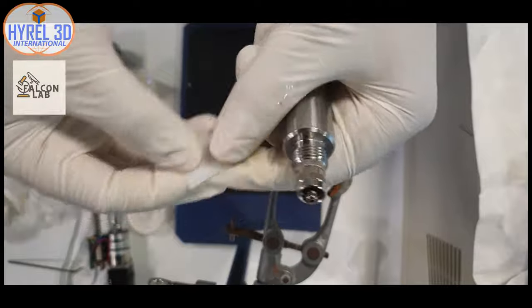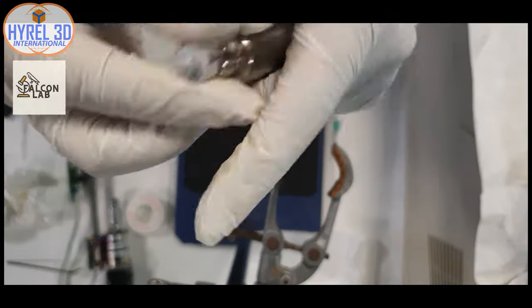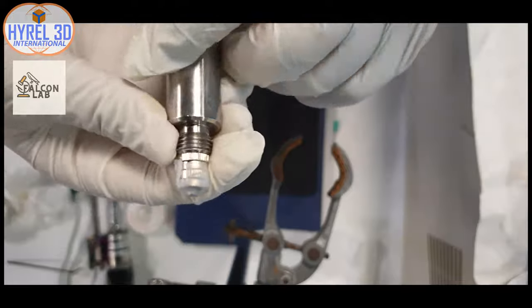Install the cartridge vertically using the clamp. Now we will add a previously heated hydrogel using a plastic pipette to reduce unwanted bubbles.